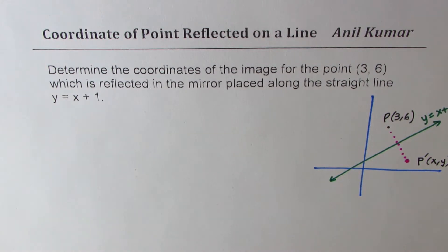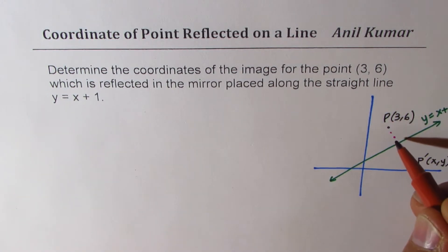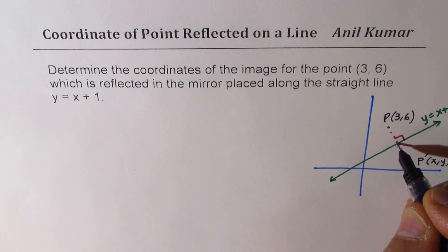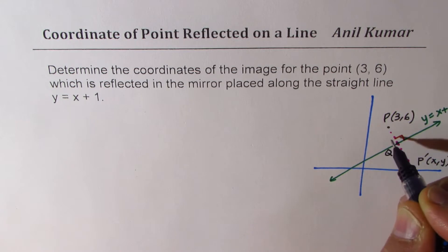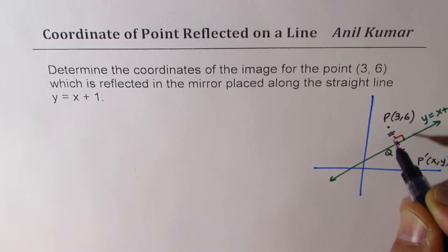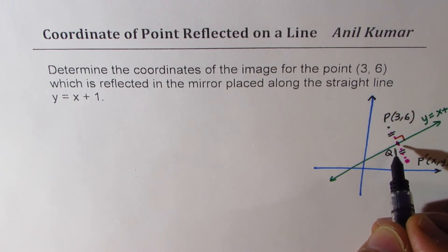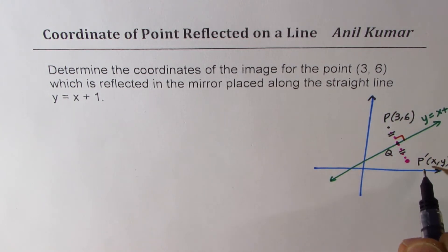The reflection image will be as far behind the mirror as it is in front. Let the coordinates of the image point P' be (x, y). To find these coordinates, we need to understand two things: first, the line PP' is perpendicular to the mirror line; and second, the point of intersection of these two lines, which we'll call Q, is the same distance from both P and P'.